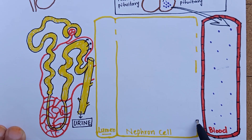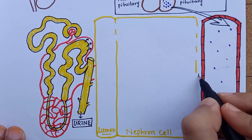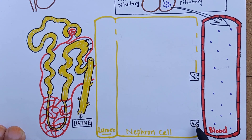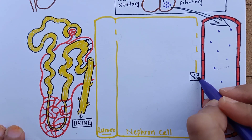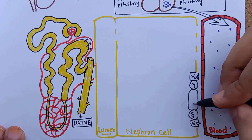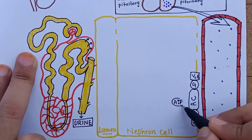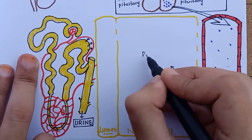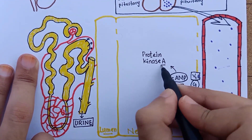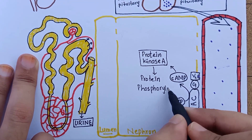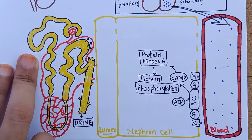The mechanism by which ADH does so is that it binds to its specific V2 receptors — V for vasopressin. The V2 receptor is a G-protein coupled receptor. ADH attachment stimulates the G-protein, which activates adenylate cyclase and stimulates the formation of cyclic AMP, which in turn activates protein kinase A and phosphorylates the intracellular protein. This is the common mechanism of action of any G-protein coupled receptor in the body.